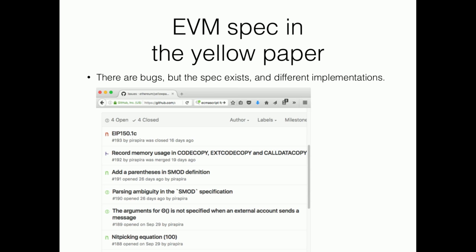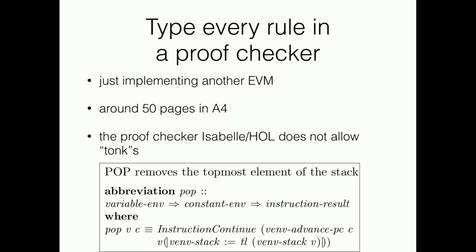Of course there are problems in the EVM specification in the yellow paper. I've been opening some pull requests to the yellow paper repository, but this is manageable. I knew that because many EVM client implementers already looked at it and found problems. The document is alive. So I just had to implement another EVM virtual machine in a theorem prover. It took like 50 pages typeset in A4 papers, but it's kind of easy.